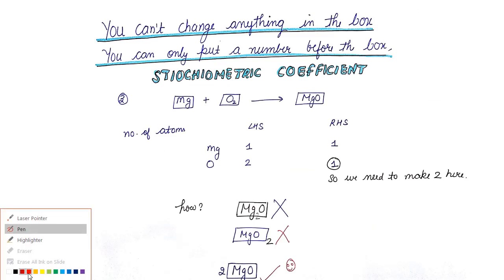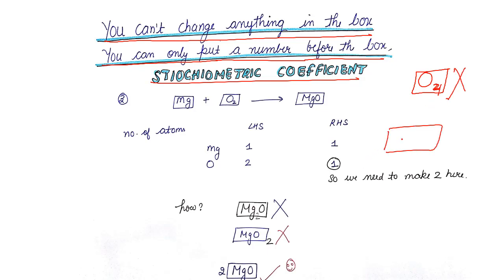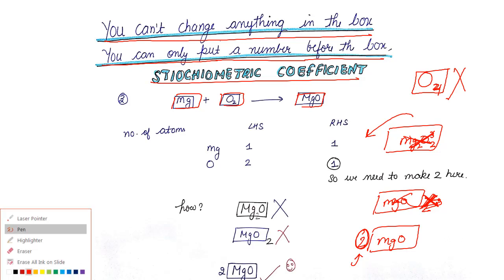One very important rule: you cannot change anything inside the box. You can only put a number — the stoichiometric coefficient — in front of the box. For example, do not change O₂ to O₄ inside the box, and do not write a subscript inside MgO. Whatever you need to do, you do it outside the box, and only in front of the box — not behind it. Writing a coefficient in front changes the whole molecule's count uniformly.